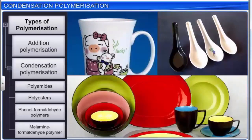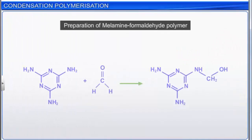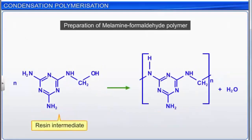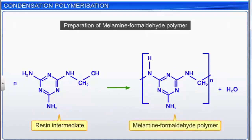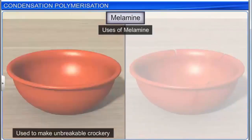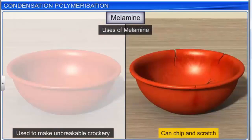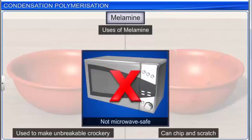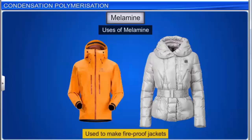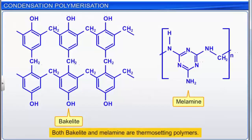Another important condensation polymer is the melamine formaldehyde polymer. The first step is the reaction between melamine and formaldehyde, forming a resin intermediate that undergoes condensation polymerization to form melamine. Melamine is used to make unbreakable crockery, though it can chip and scratch and is not microwave safe. Melamine is also used to make fireproof jackets. Note that both Bakelite and melamine are thermosetting polymers.